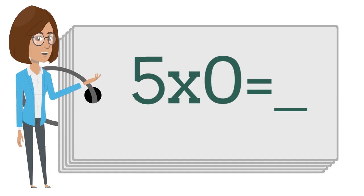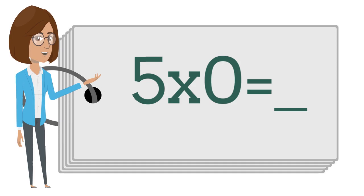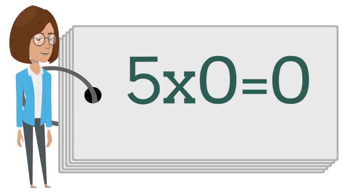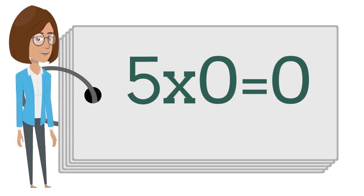Five times zero is? Say the answer out loud. Five times zero is zero.